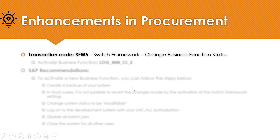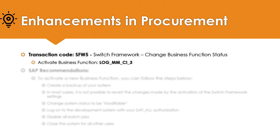In order to do that, we use the transaction code SFW5, which is used to change business function status. SAP has already provided us with business functions which we can activate. The following business function needs to be activated in order to fulfill the business scenario.